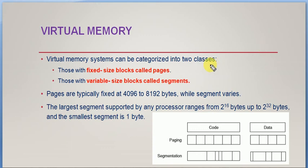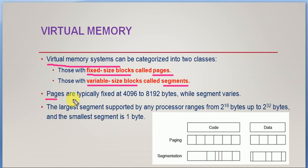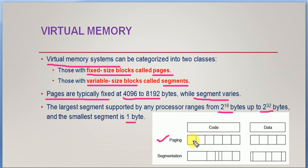Virtual memory can be categorized into two classes: fixed-size blocks, also called pages, and variable-size blocks, also called segments. So virtual memory comes under two categories: paging and segmentation. Pages are of fixed size ranging from 4096 to 8192 bytes, but segments are of different sizes. The largest segment supported by any processor ranges from 2^16 bytes up to 2^32 bytes, and the smallest is one byte.